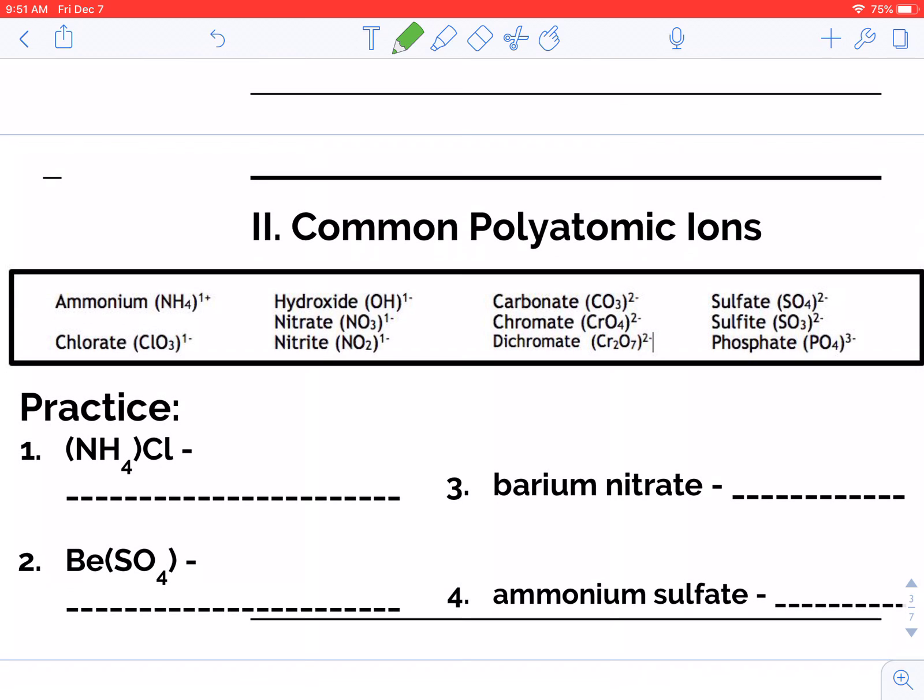Next class, we will have our first attempt at a polyatomic ion quiz, and then the following class, you will have another attempt, and I'll just keep whatever score is higher. The way the quiz will be set up, I might write down ammonium, and so you would have to know that's NH4 1+. Or I might give you NH4 1+, and so you would need to write ammonium.